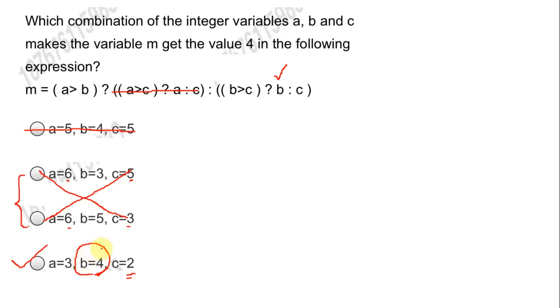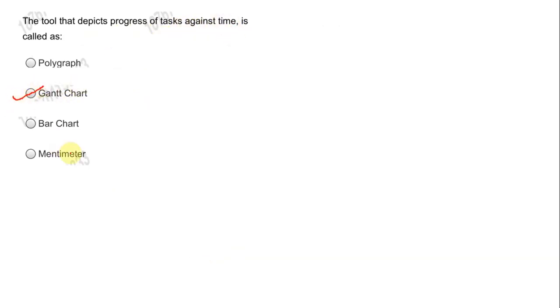This is basically a program to find the largest number among a, b, and c, and we need the largest value to be 4. I have shown you both approaches: understanding the meaning of the expression and solving it directly, or substituting the values from each option one by one. Next question is from SDLC — the tool that depicts the progress of tasks against time is called the Gantt chart, used in project management.